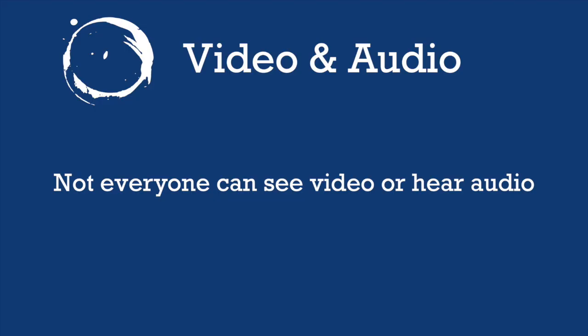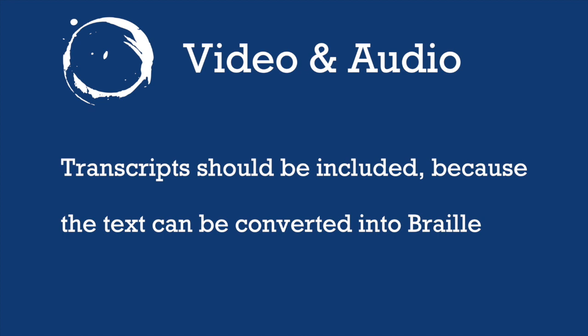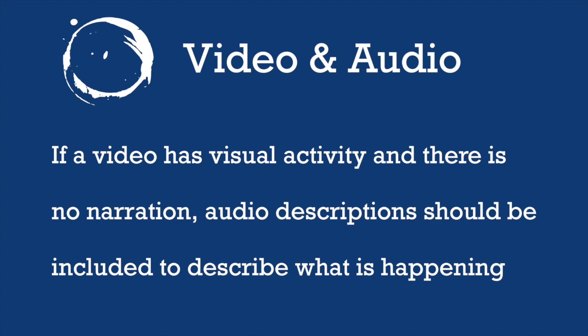Let's discuss the fifth element of Universal Design for the Web — video and audio. When creating video and audio content on the web, we must remember that not everyone can see video or hear audio. Transcripts tell, word for word, what is happening in your video. Transcripts should be included because the text can be converted into braille. If a video has visual activity and there is no narration, audio descriptions should be included. I will include a link at the end of this video for how to include an audio description in a YouTube video.